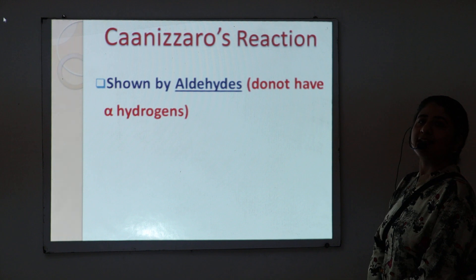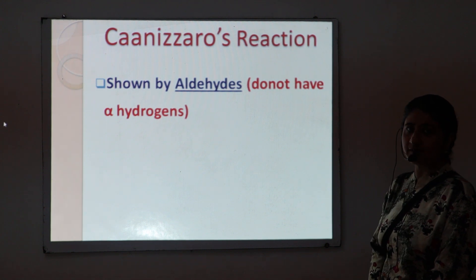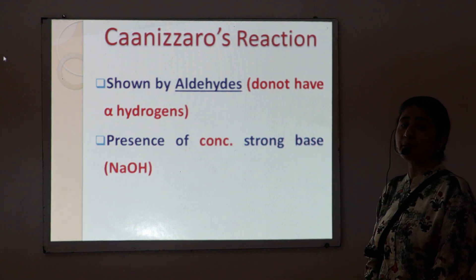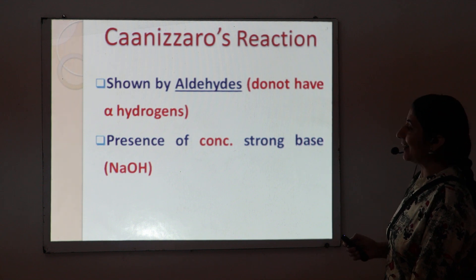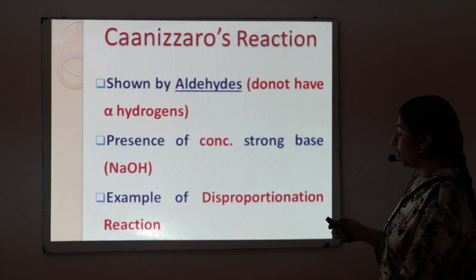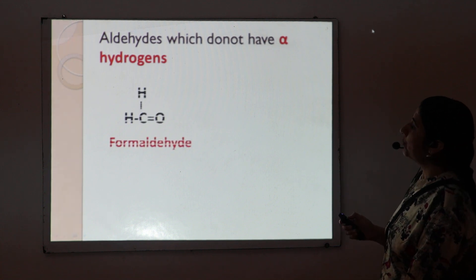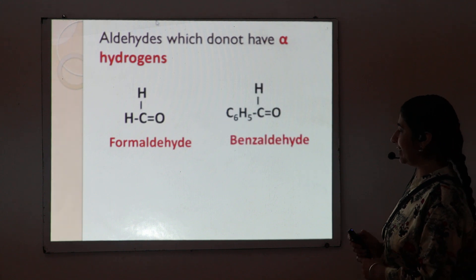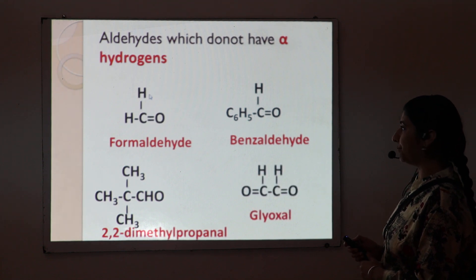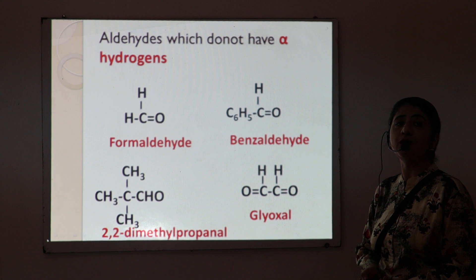The Cannizzaro reaction is shown by those aldehydes which don't contain alpha hydrogen. Second, it takes place only in the presence of a concentrated strong base, that is sodium hydroxide. And third, it is an example of a disproportionation reaction. We have a few examples of aldehydes which don't have alpha hydrogen: number one, formaldehyde; second, benzaldehyde; third, 2,2-dimethylpropanal; and fourth, glyoxal. These aldehydes don't have alpha hydrogen, and these aldehydes show the Cannizzaro reaction.